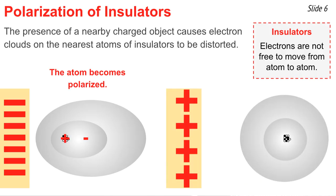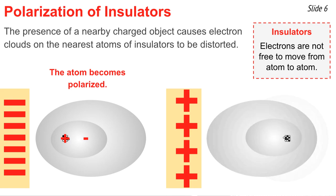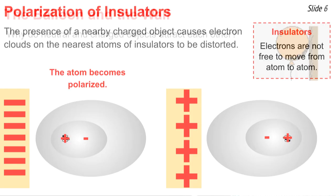The same thing happens if a positively charged object is brought near an atom. The electrons say they want to be more on the near side of the nucleus, which once more distorts the electron clouds and polarizes the atom, with negatives being closest to the positive object and positives furthest away. This is what happens to polarize an atom. And if you have an object composed of many atoms, what will happen is many of the atoms on the surface will polarize, thus polarizing that entire object.